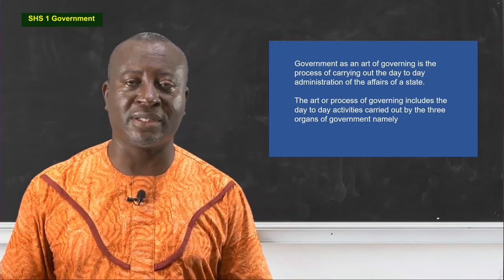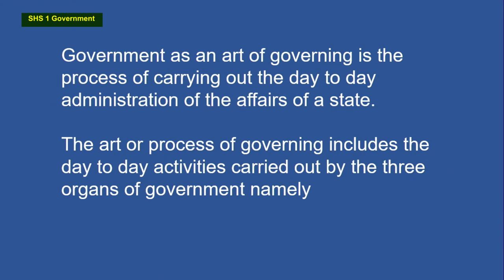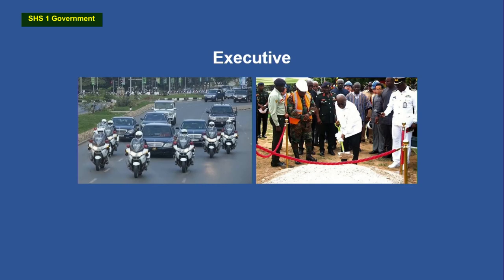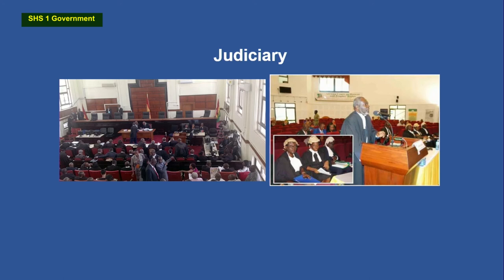Government as an act of governing is the process of carrying out the day-to-day administration of the affairs of a state. The acts of governing include the day-to-day activities carried out by the three organs of government: the legislature — that is parliament — the executive, who are seen moving up and down cutting sods for the commencement of school buildings, hospitals, or other projects beneficial to people within a jurisdiction, and the courts. That is the summary of the meaning of government.